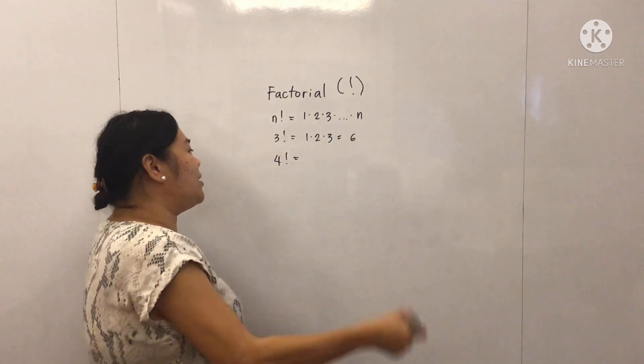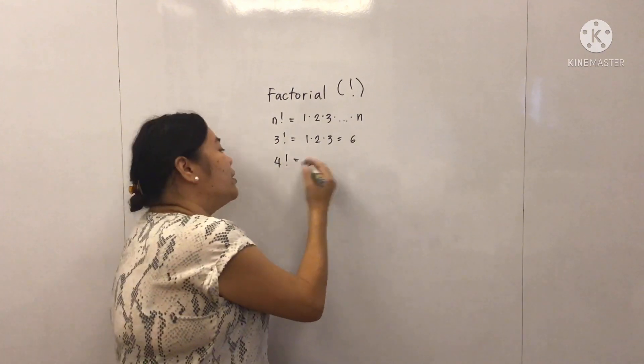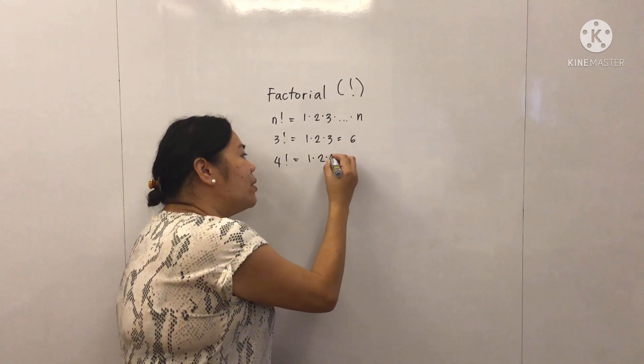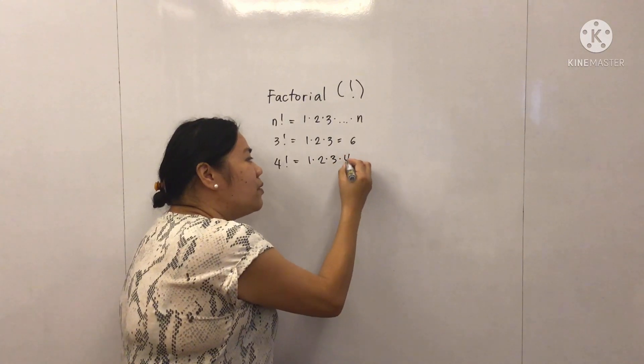Another example, let's look at 4 factorial. So this equals 1 times 2 times 3 times 4.